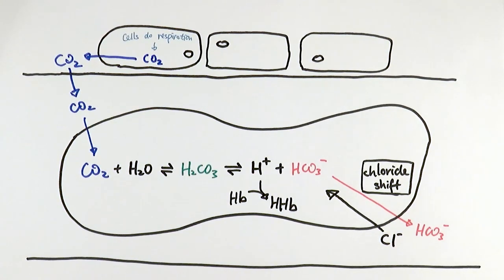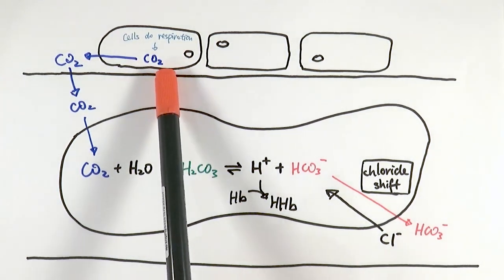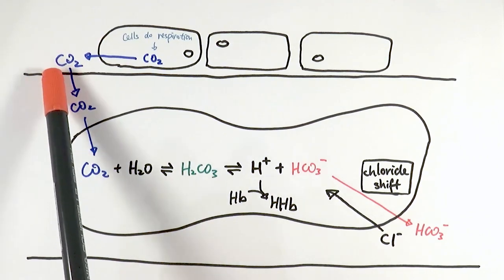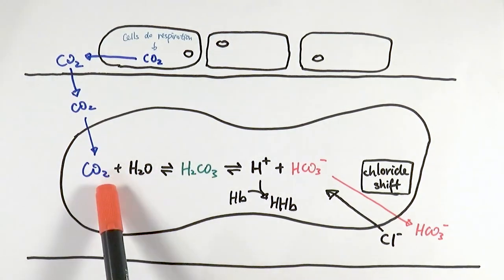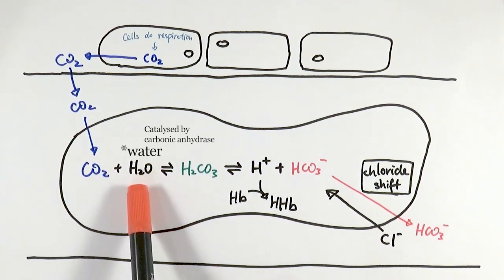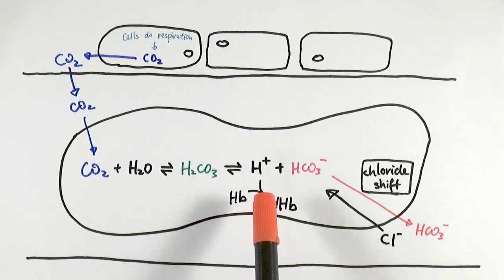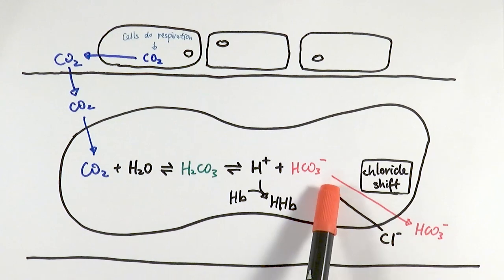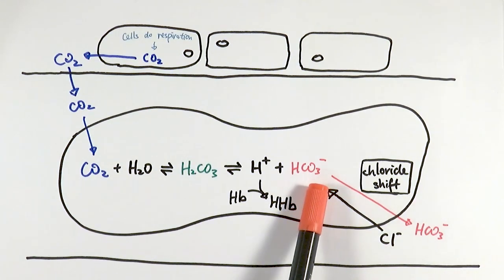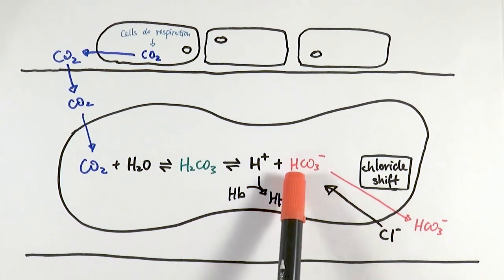To summarize: cells carry out respiration, releasing carbon dioxide which diffuses out into tissue fluid, then into the plasma, and finally into the red blood cell. Inside the red blood cell, carbon dioxide reacts with water to form carbonic acid, which is a weak acid that ionizes and dissociates easily into hydrogen ions and HCO₃⁻ — hydrogen carbonate ions. The hydrogen ions are then buffered by binding to hemoglobin to form hemoglobinic acid.